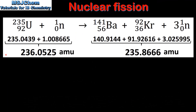In the next example we will calculate the energy released in a nuclear fission reaction. In this fission reaction uranium-235 absorbs a neutron to form barium-141, krypton-92, and 3 neutrons.